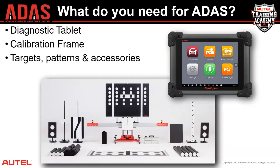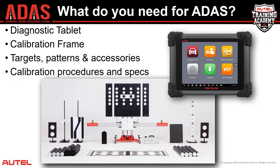You also need all the different targets, patterns, and accessories for the types of calibrations you're going to perform. It really depends on your business model and what calibrations you're going to be doing. Then finally you'll need information — the calibration procedures and specifications for setting up the targets, patterns, or radar accessories. It's those precise measurements the OEM gives you from a specific point on the vehicle to a specific point on your targets, so the vehicle knows that the target is placed in exactly the right position.